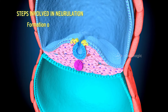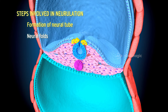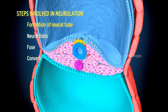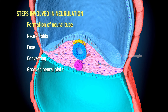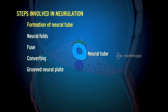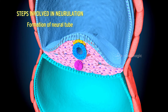Formation of Neural Tube. The neural folds move towards each other and fuse, converting the grooved neural plate into a neural tube. This fusion occurs in a craniocaudal direction, and the tube soon separates from the surface ectoderm as the neural folds meet.